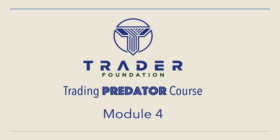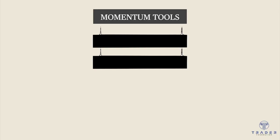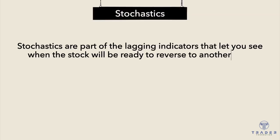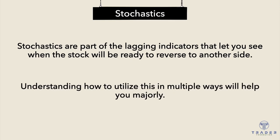Welcome back to module number four, where we continue to examine different tools with technical analysis that can help us make the right decision when trading a stock. So now we're going to talk about the momentum tools. And the first tool we're going to discuss is known as the stochastics. Stochastics are part of the lagging indicators that let you see when the stock will be ready to reverse to another side.